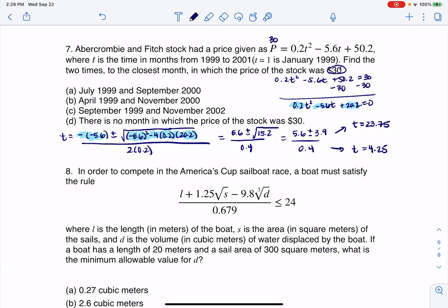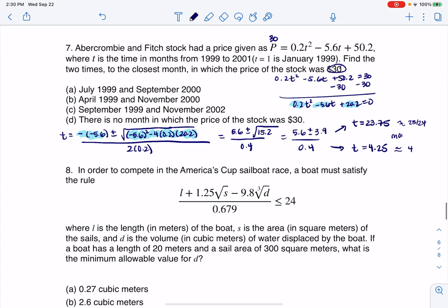So this is saying about 23-24 months after January 1999, and this is about 4 months. Let me write months—that's not a good way to spell months. Let me erase and fix that.